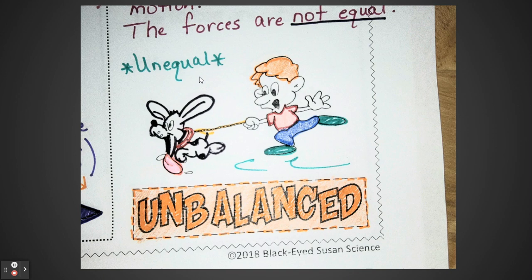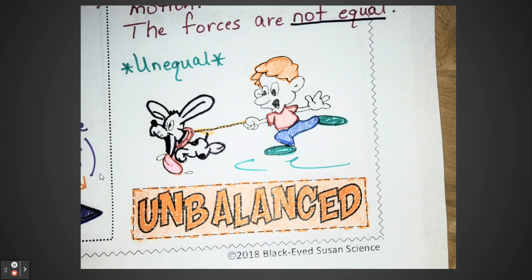Just to recap: force is a push or pull of an object, measured in newtons. We don't call arrows arrows in science — we call them vectors, and they show the direction of force. Unbalanced forces are greater than zero newtons and cause a change in motion. Balanced forces equal directly to zero newtons. Enjoy the day and don't forget to turn in your assignment.